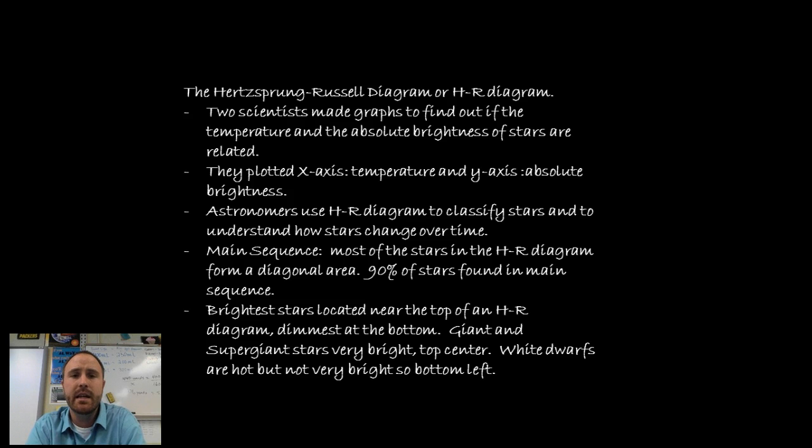And what they did is they placed the temperature on the x-axis and on the y-axis they put the absolute brightness. And as they did this, they discovered that there is a sequence as to where stars are located. To start with, we know that 90% of our stars are found in a diagonal area going right across the middle.